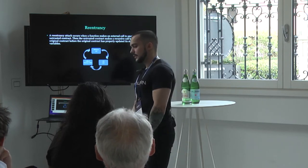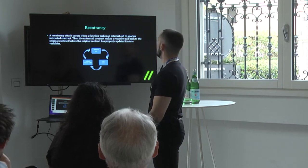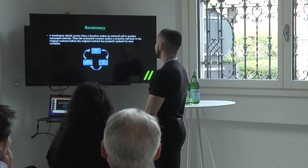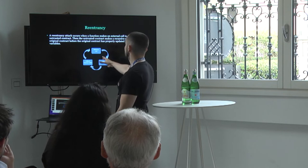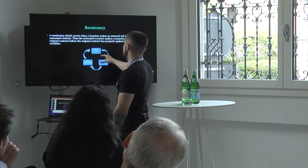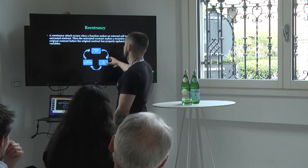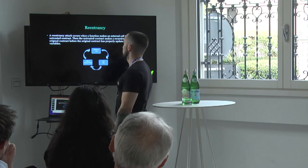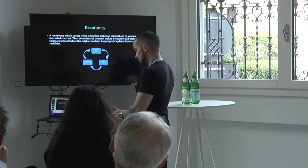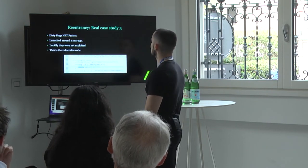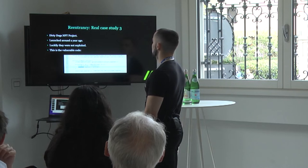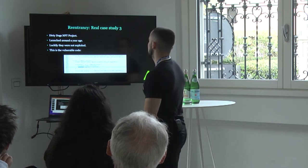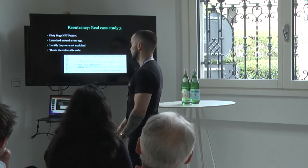Now let's talk about reentrancy — the typical bug everyone knows in Solidity. Every time you make an external call to an untrusted contract, issues can happen. This is the typical flow: when you send a native asset to a smart contract, that contract can implement malicious code in the fallback function. But I want to show another case — a public project launched about a year ago with a terrible reentrancy vulnerability. These guys were not exploited; they were lucky.